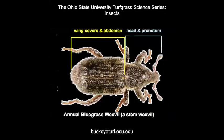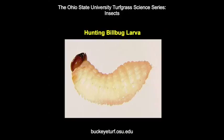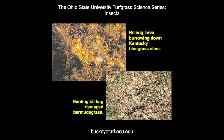All weevil larvae are somewhat C-shaped, almost like white grubs, but they have no legs. Stem weevil and billbug larvae feed on grass stems, crowns, roots, and stolons. Stem weevils and billbugs can kill small to large irregular patches of turf, especially during drought conditions.